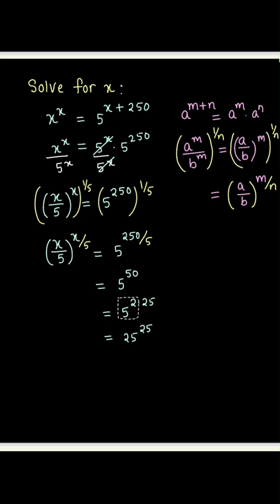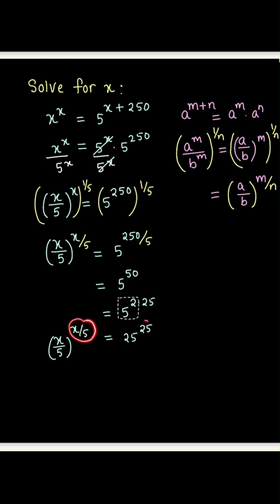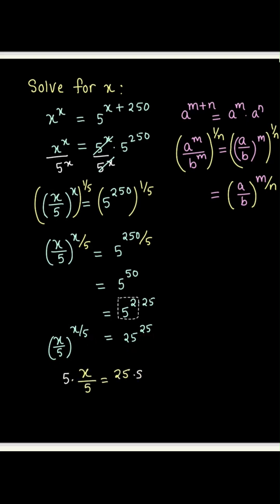So what do we get? We get x over 5 to the power x over 5 equals 25 to the power 25. That implies the base x over 5 on the left-hand side equals the base 25 on the right-hand side, and the exponent x over 5 on the left-hand side equals the exponent 25 on the right-hand side. So we have x over 5 equal to 25. Multiply both sides by 5 and we get x is equal to 125.